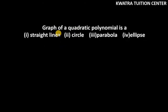Part C is graph of a quadratic polynomial is a straight line, circle, parabola and ellipse. So it is parabola. They told us that the quadratic polynomial is always a parabola, and it has already been given here in the hint.